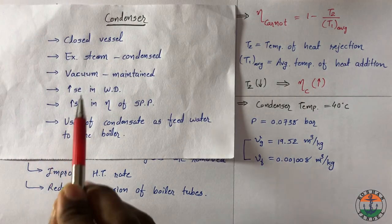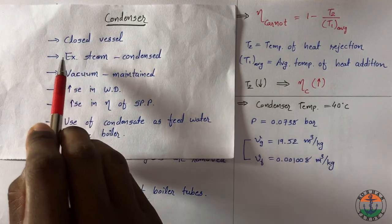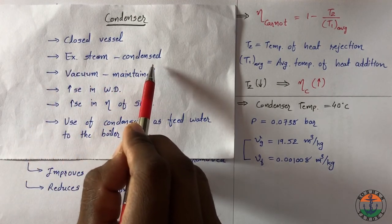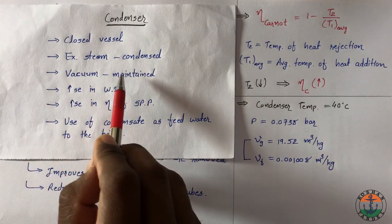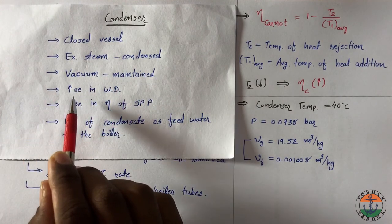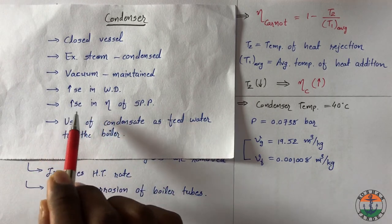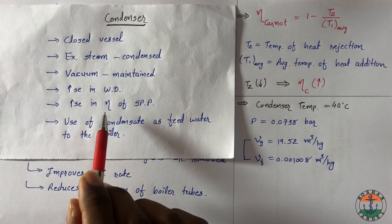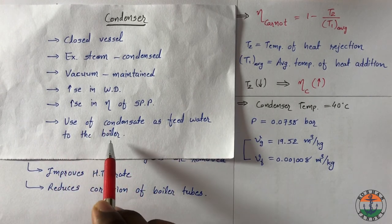Condenser is defined as a closed vessel in which exhaust steam from the steam turbine is condensed with the help of cooling water and vacuum is maintained, resulting in increase in work done and increase in efficiency of the steam power plant and use of condensate as a feed water to the boiler.